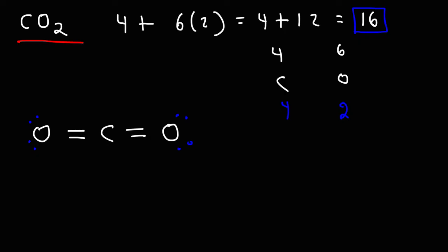Now, in this structure, we have a total of 16 valence electrons: two, four, six, eight, ten, twelve, fourteen, sixteen. This is the Lewis structure of the carbon dioxide molecule.